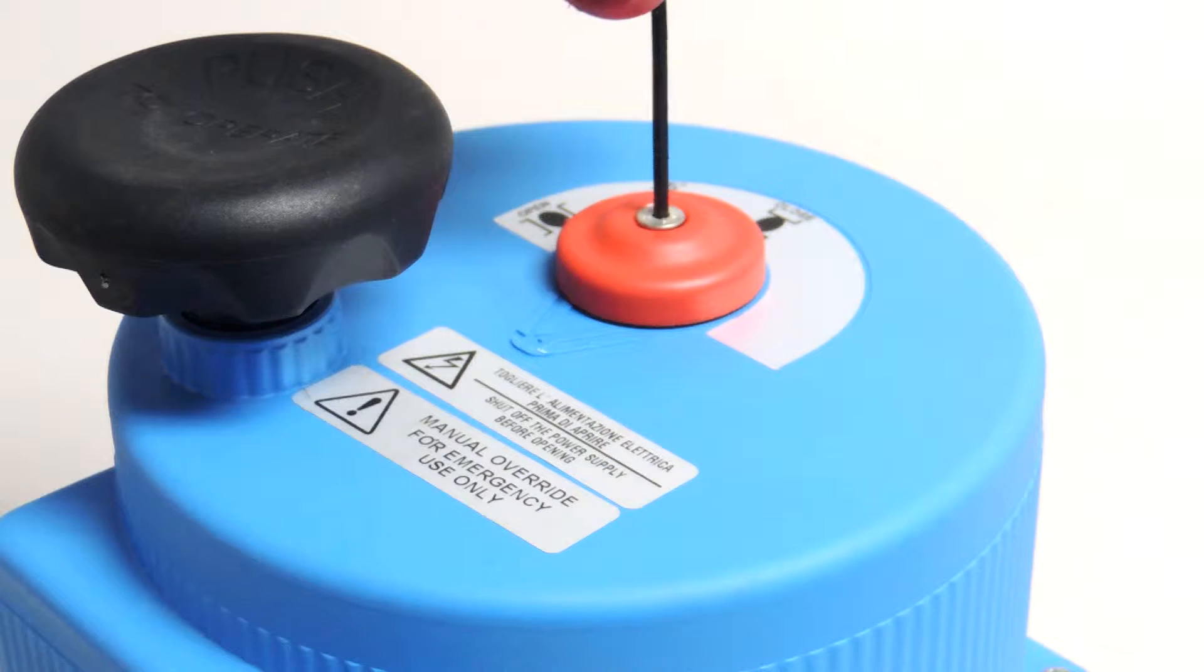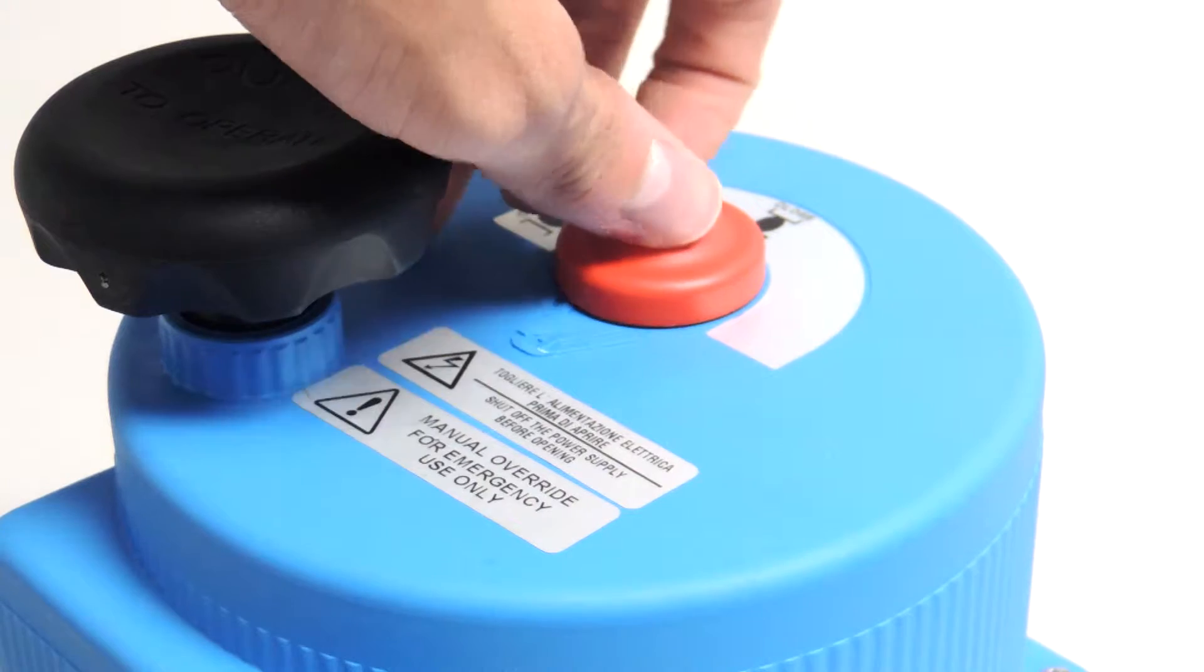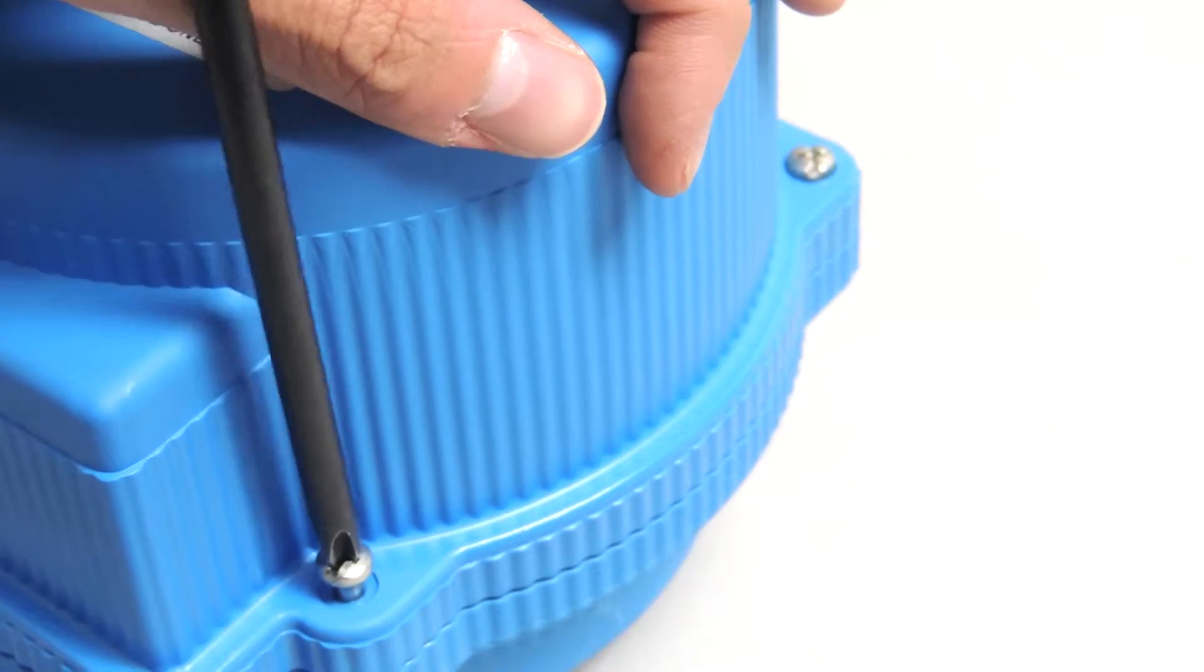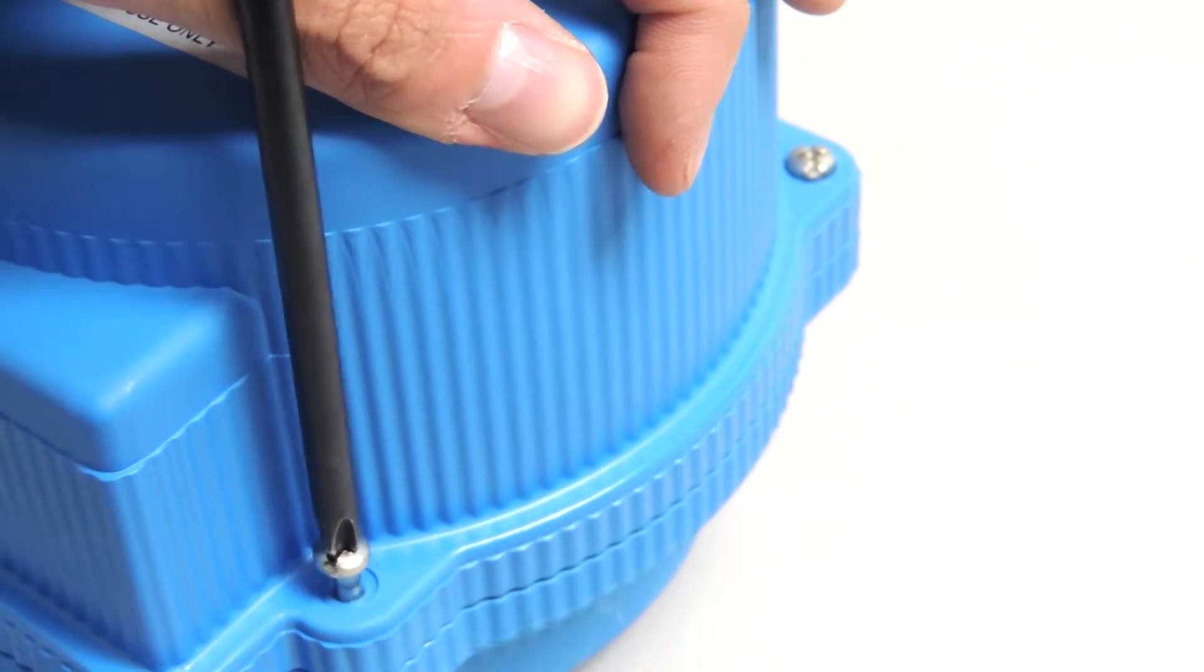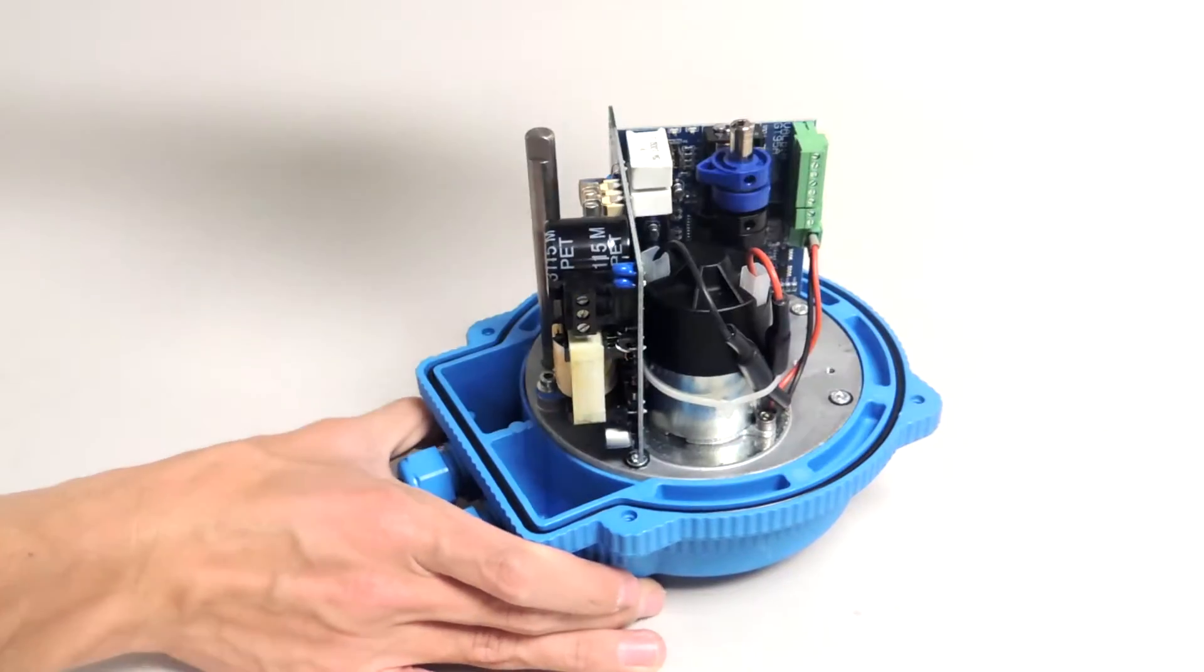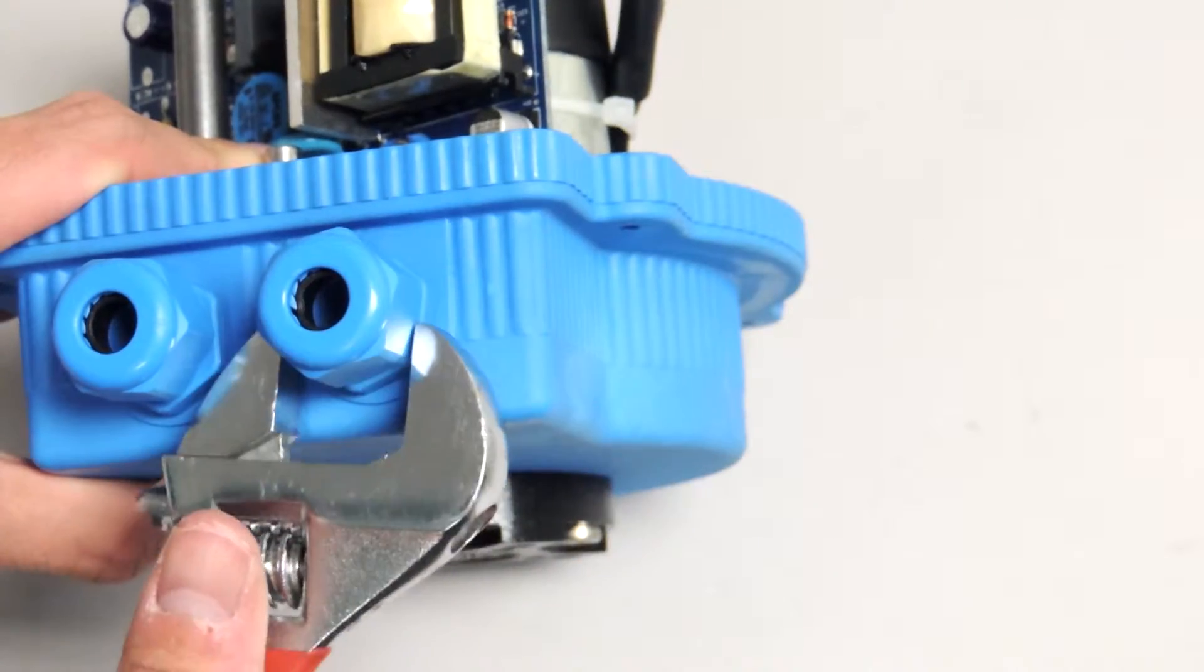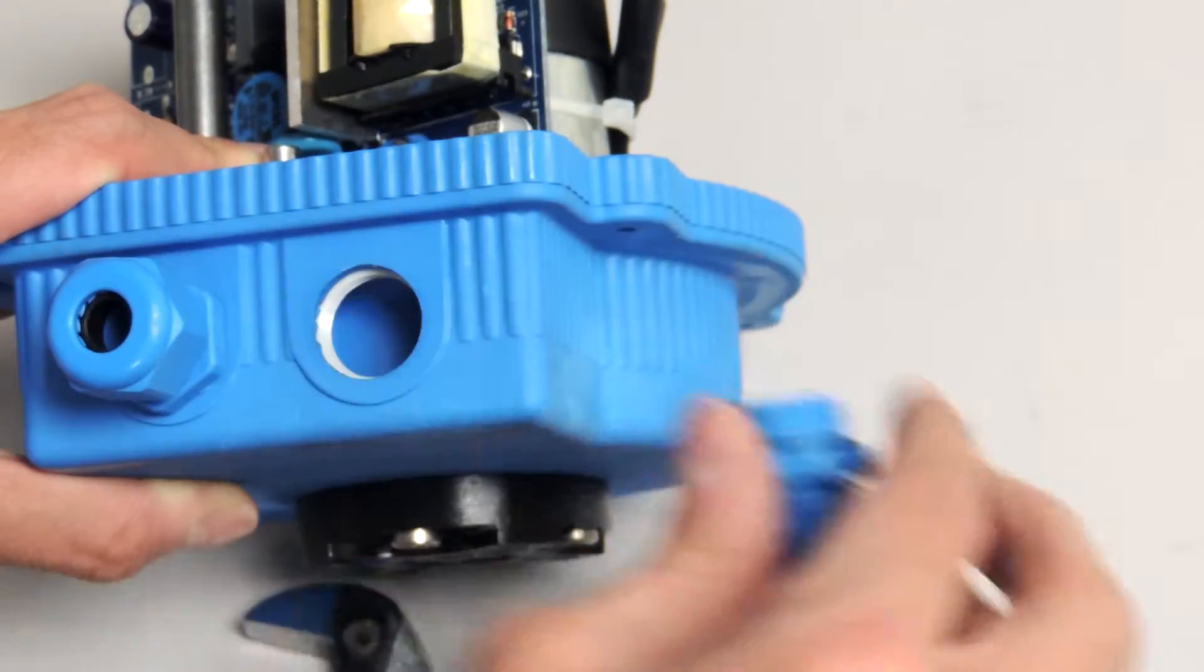Unscrew the bolt on the red indicator dial and then remove it from the unit. Then, unscrew the four screws holding the shell together and put the top part off to the side. Remove one of the conduit ports from the housing and replace it with the conduit port adapter.